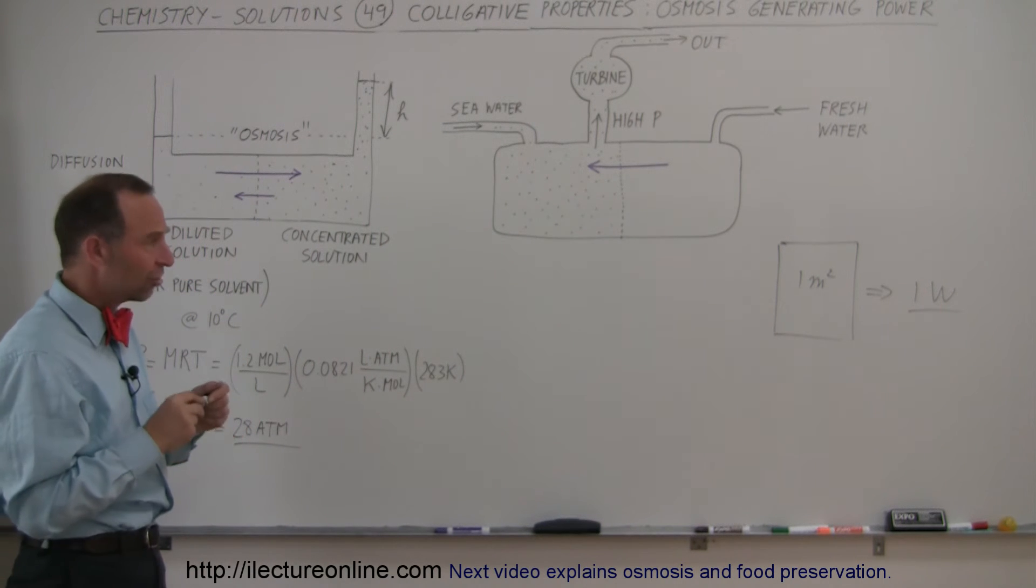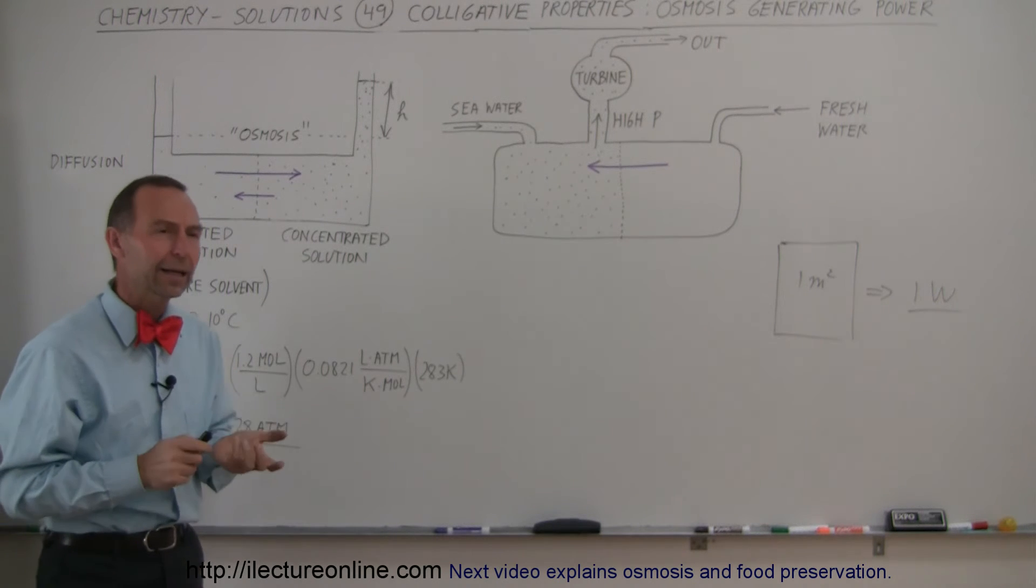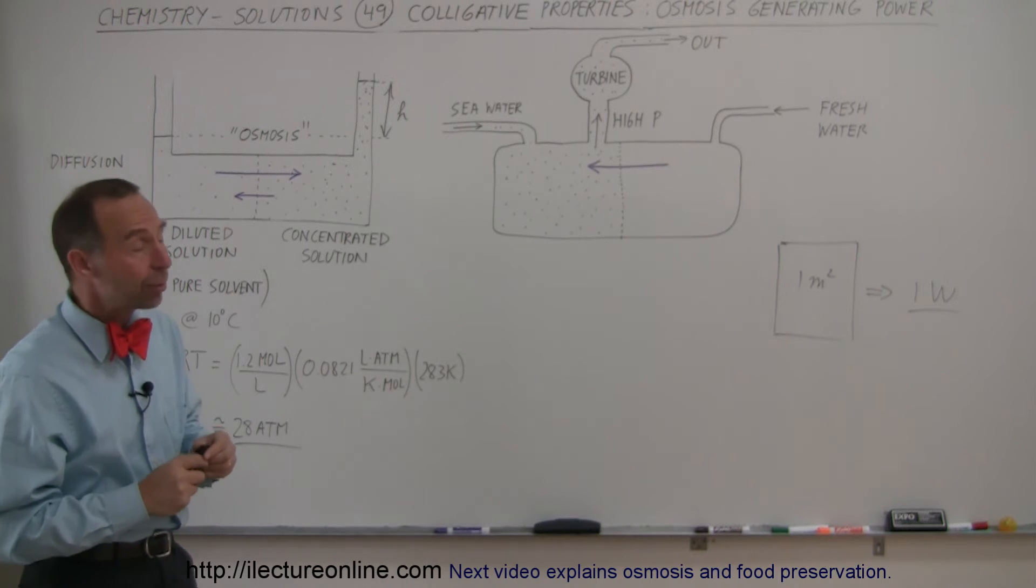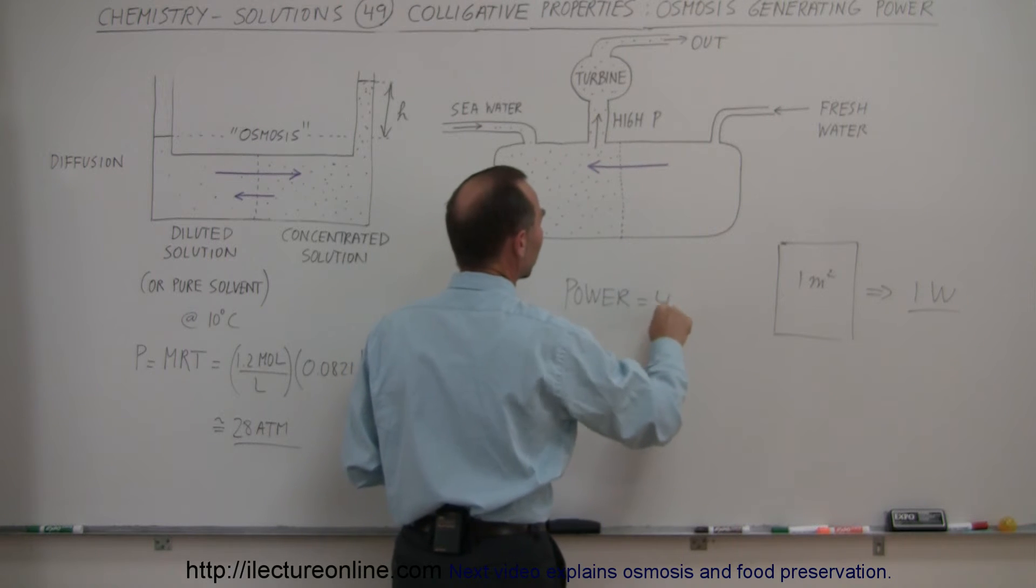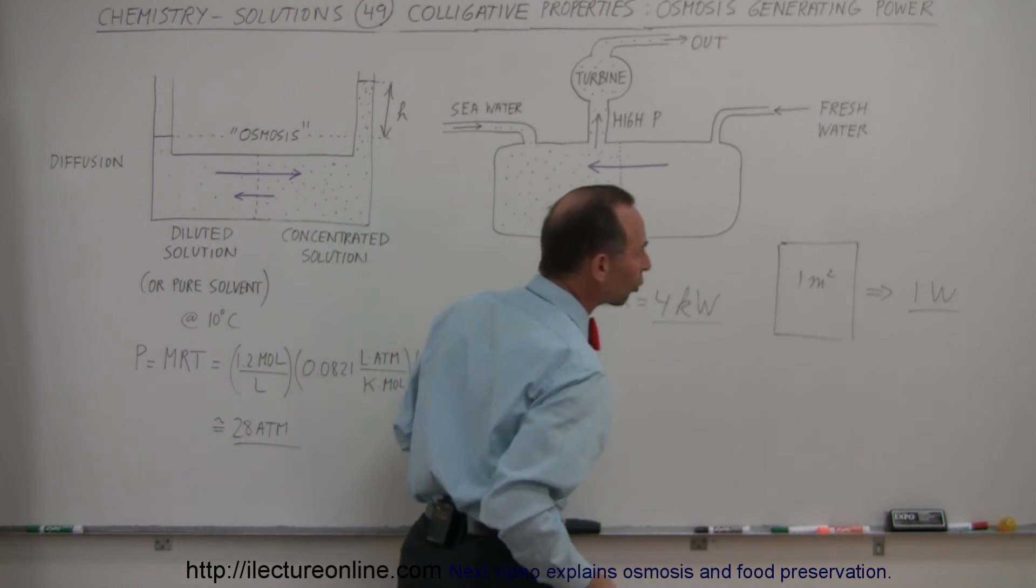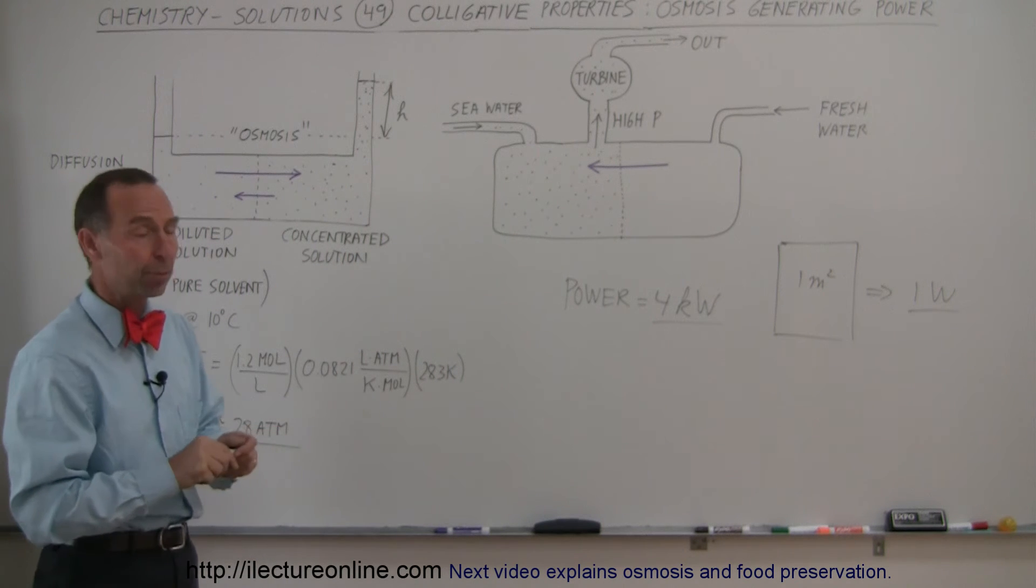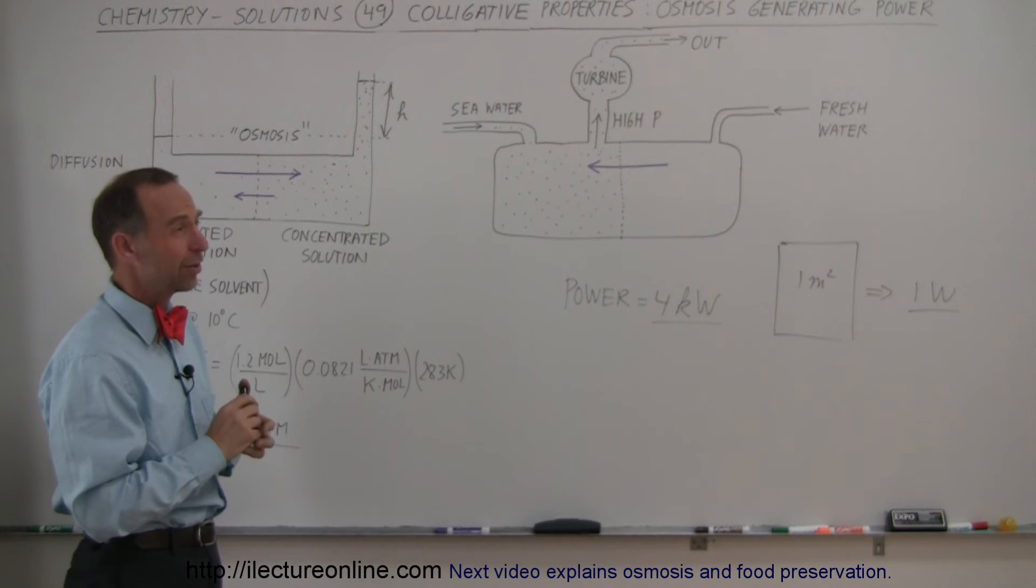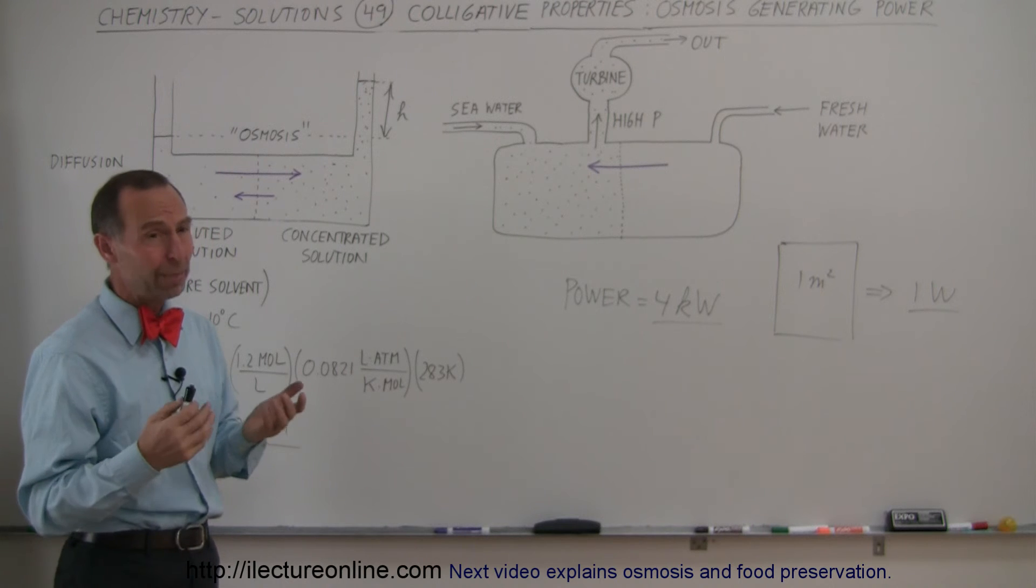They tried this. They actually set up an experimental generating station in Norway in about 2009 when the plant came online, and they were actually able to produce power equal to about four kilowatts, which meant they needed a total surface area of semi-permeable membrane of 4,000 square meters. 4,000 square meters—that's almost 40,000 square feet and that's quite a bit.